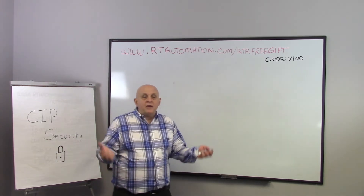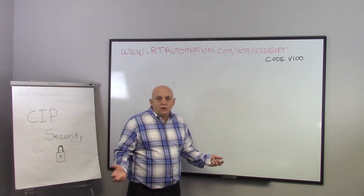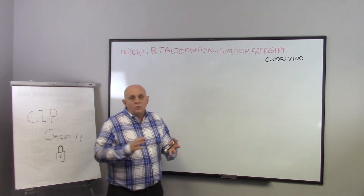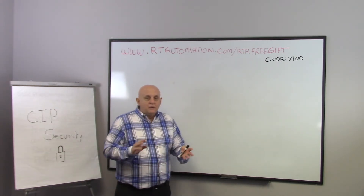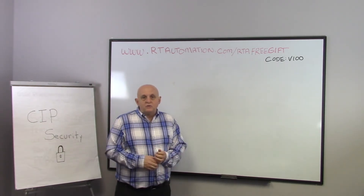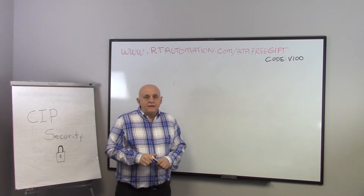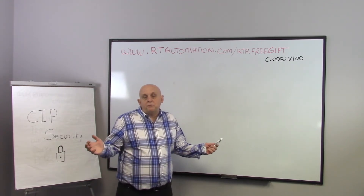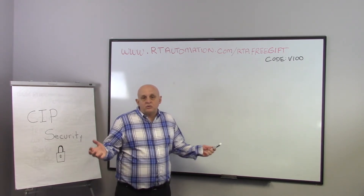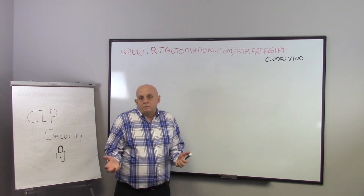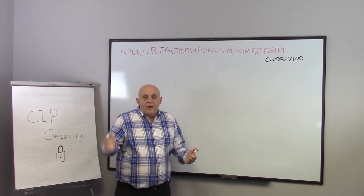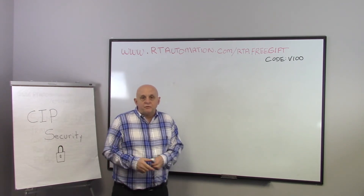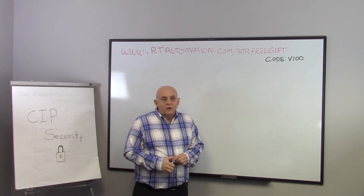And lots of people have access to your IO network — vendors coming and going, IoT people, corporate people, machine builders — and who knows what they're going to do if they plug into the wrong switch. Even if one of your people, knowingly or unknowingly, plugs something in incorrectly, and all of a sudden there's a path to the internet from your IO network, you're in trouble.